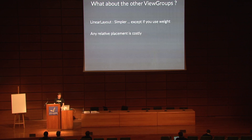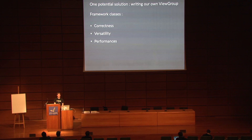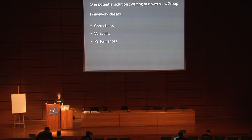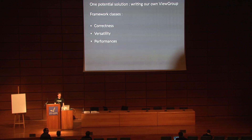If you still don't have the performance you want and you want to make your designer's awesome design work, one potential solution is to throw away the platform classes and write your own. Framework classes like RelativeLayout have three priorities: first, be correct — apply all your specifications; second, be versatile — handle everything like above, under, below, align top, and so on; and third, serve performance as much as possible while respecting the first two. With a custom ViewGroup, we can forget about versatility — we want to do something specific — and that way we can still be correct while having the best performance possible for that specific arrangement of views.